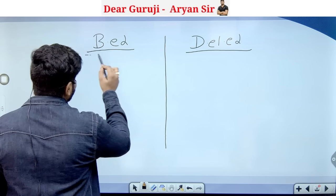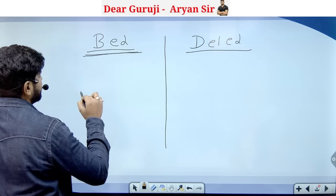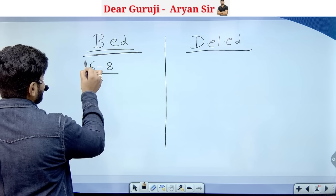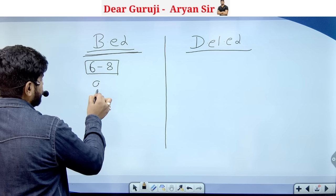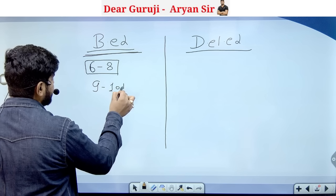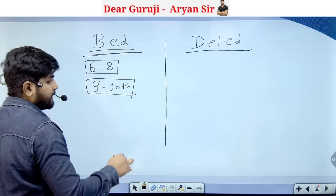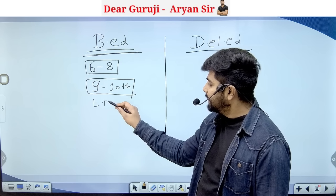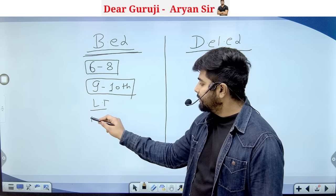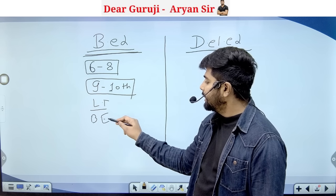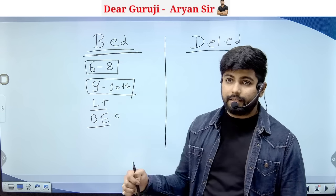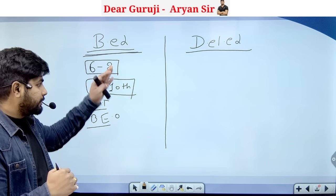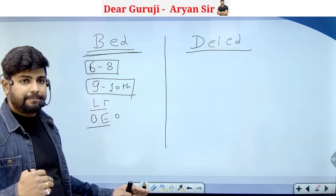Now, what is the fact about BEd? If you are doing BEd, then you are eligible for upper primary, that is class 6 to 8, and also for class 9 and 10 vacancies. So you are eligible for TGT vacancies. Besides that, the LT grade, the basic education BEO, and other upper-level vacancies in the teaching line.